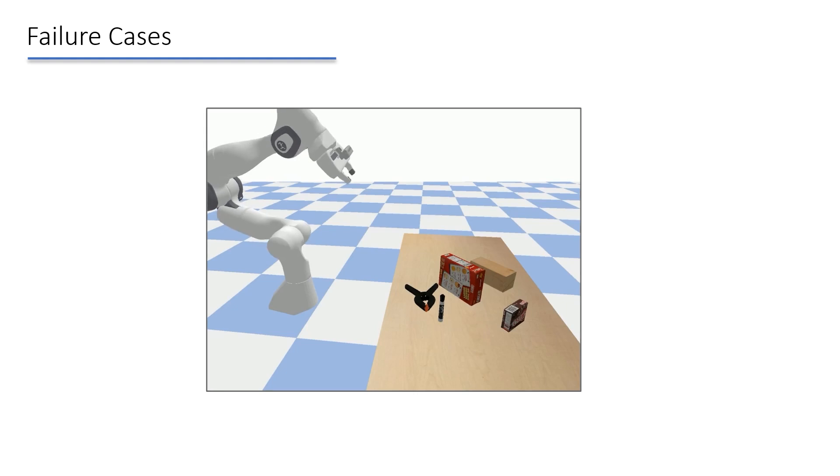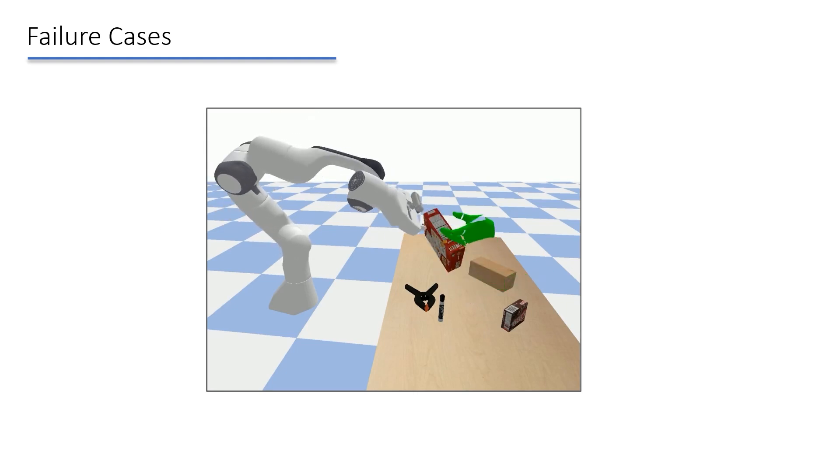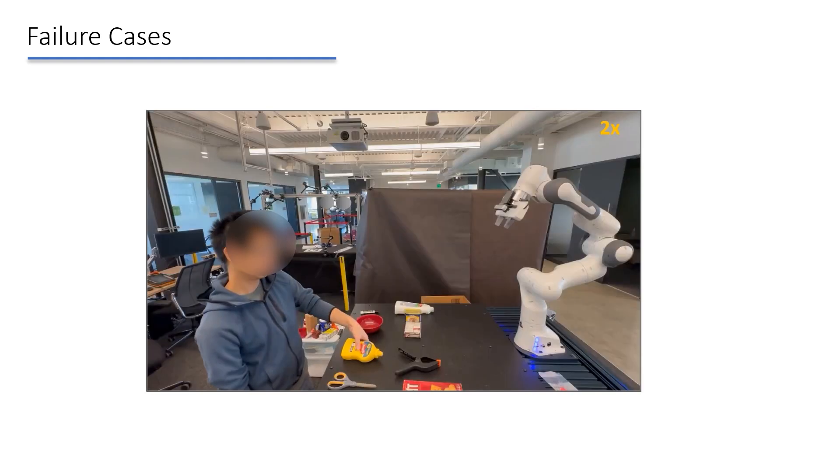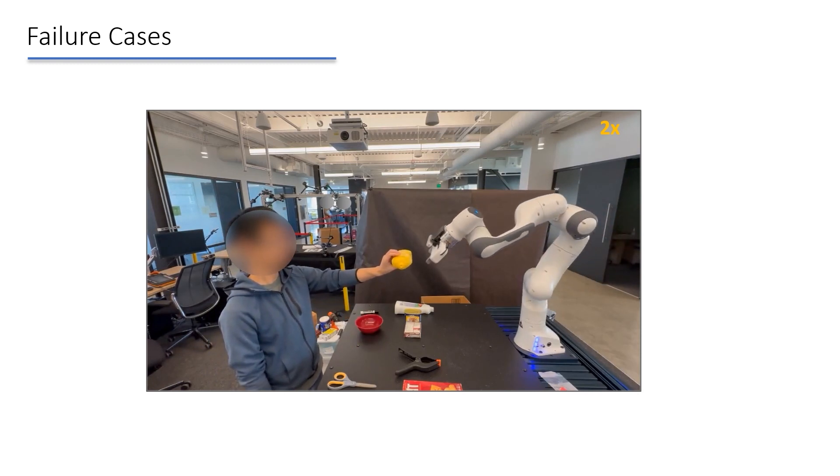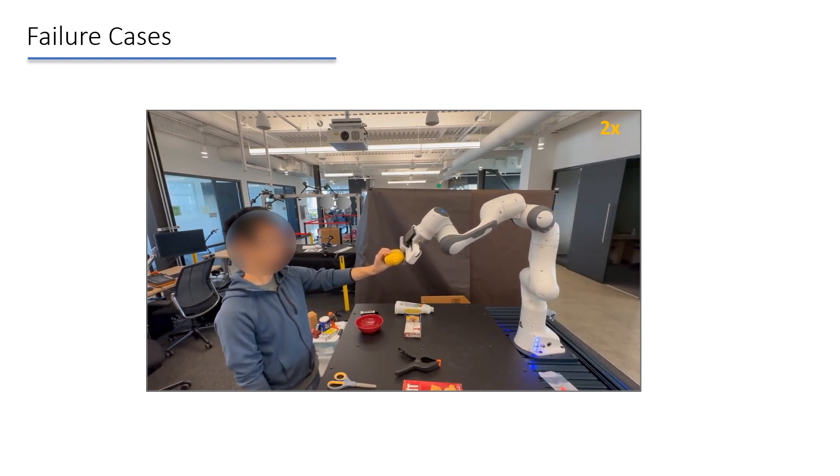Our approach struggles when the human moves too fast towards the robot. Due to noise in the real system, the robot does not always find a feasible grasp.